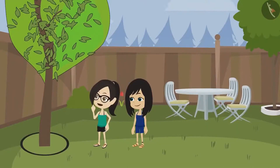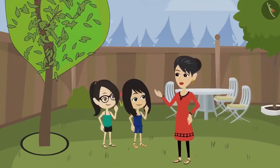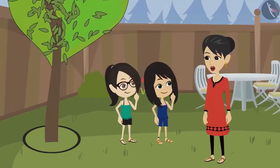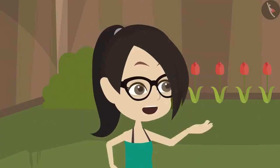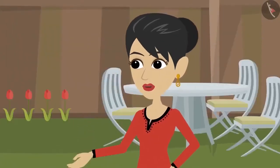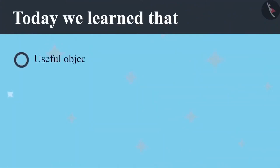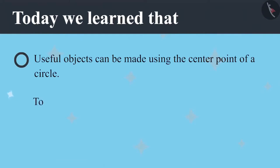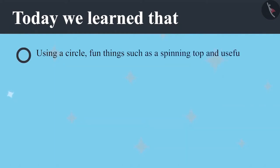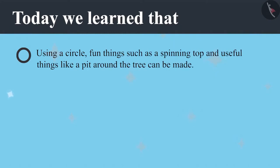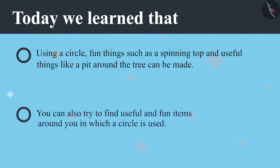A circle has been made. How did you do it? It was easy, mummy — using a thread. You both are getting older and smarter. Today we learned that useful objects can be made using the centre point of a circle. To find the centre of a circle-shaped paper, fold it in half and then in half again. A circle can be used to make fun things such as a spinning top and useful things like a pit around a tree.